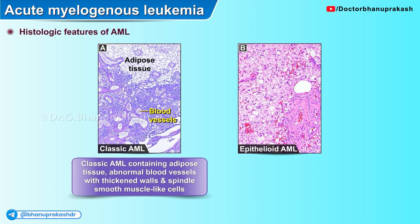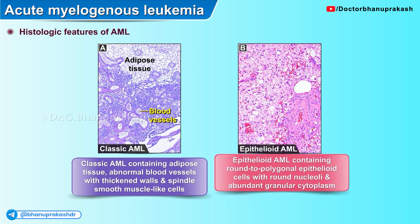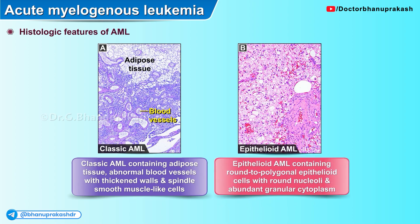As seen in panel B, there is epithelioid acute myelogenous leukemia containing round to polygonal epithelioid cells with round nucleoli and abundant granular cytoplasm.